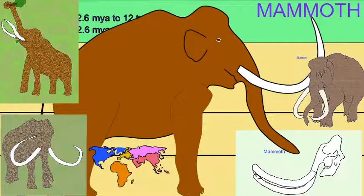Mammoths became extinct about 4,500 years ago, at a time when climate was changing as the glaciers receded and early humans were hunting large mammals.